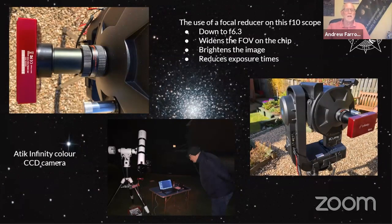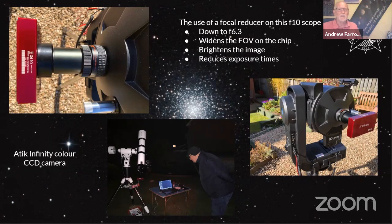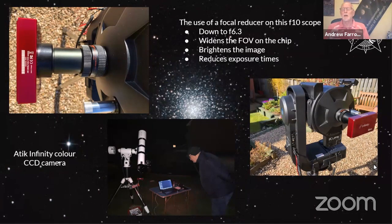This is the ATTIC camera I use, on the back of my Meade 8-inch. I've also used it with my ES127 scope. I use a focal reducer to take the F/10 of the Meade down to about F/6.3, which gives a brighter image and reduces the exposure times.